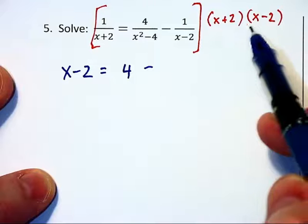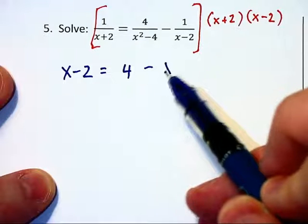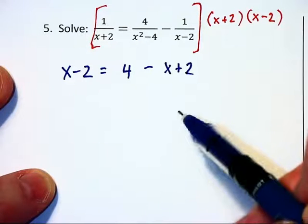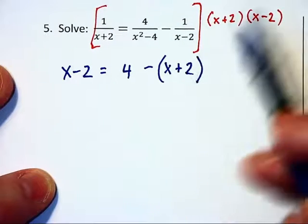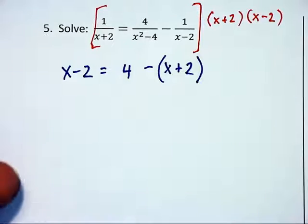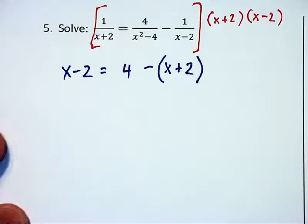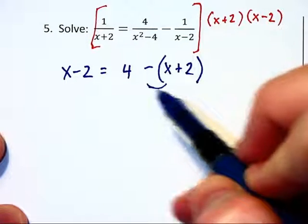Minus, and then the x minus 2's cancel, and if you write x plus 2 there, you're going to get it wrong, because it's negative 1 times that, and you don't want to mess up the distribution of that negative. So please be on the lookout any time subtraction is involved. Let's do that distribution on the right.